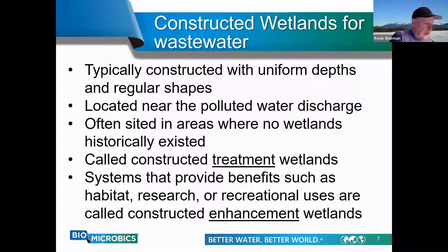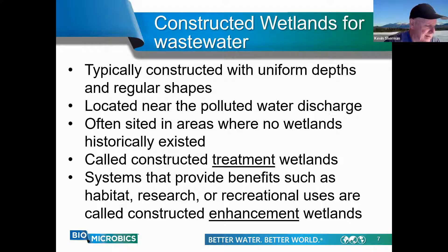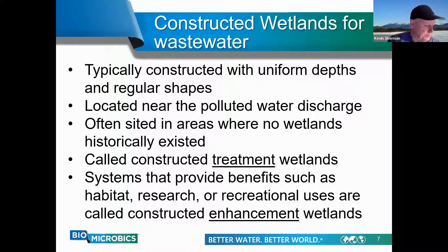Specifically for wastewater treatment, constructed wetlands are built with uniform depths and regular shapes. They should be sited close to the wastewater source to save on conveyance costs. Constructed treatment wetlands can and often are placed in areas that never contained wetlands originally — the wastewater added to the site will allow the wetland ecosystem to thrive. When wetlands are used for additional benefits such as wildlife habitat, research, recreational, or educational uses, they're called enhancement wetlands. Both constructed treatment wetlands and enhancement wetlands have been readily used around the country.